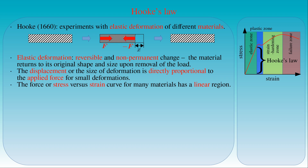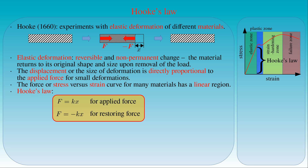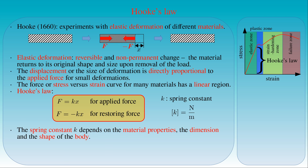We already gave the mathematical form of Hooke's law, stating that the applied or the restoring force F is equal to plus or minus a constant k times the displacement x — that is, the change in the length of the deformed body. The plus sign is for the applied force and the minus sign is for the restoring force causing the body to return to its original dimensions. As the law of action and reaction states, the applied and restoring forces are equal and opposite in direction. The value of the constant k, called the spring constant, has the unit of Newton per meter, and it depends on the material properties, the dimensions, and the shape of the body.